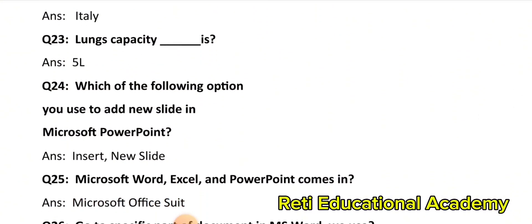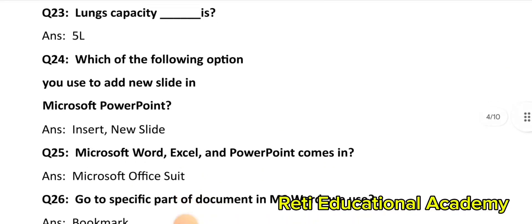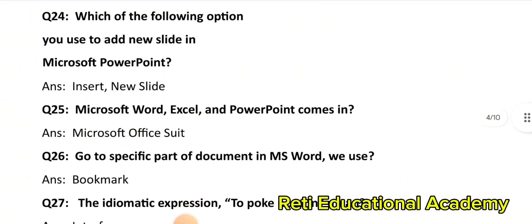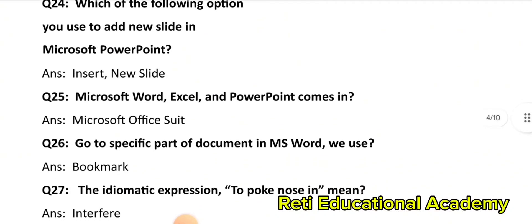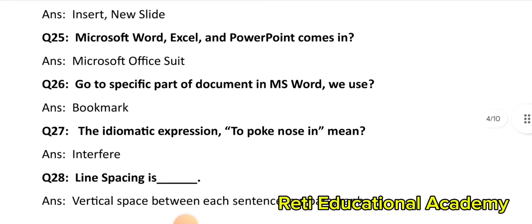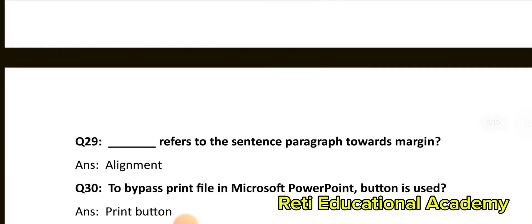Question number 25: Microsoft Word, Excel, and PowerPoint come in: Microsoft Office. Question number 26: To go to a specific part of a document in MS Word, we use: Bookmark. Question number 27: The idiomatic expression 'to poke one's nose' means: Interfere. Question number 28: Line spacing is the vertical space between each sentence in a paragraph. Question number 29: Alignment refers to the sentence or paragraph position towards the margin.